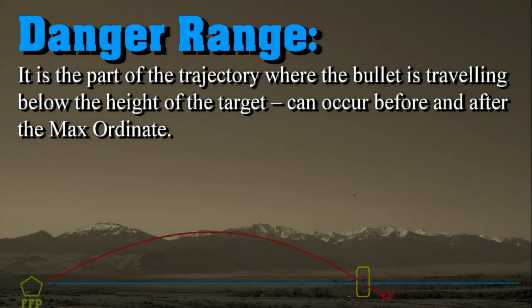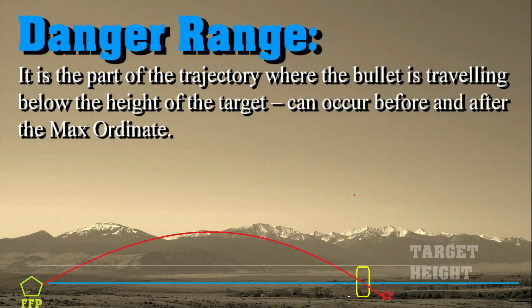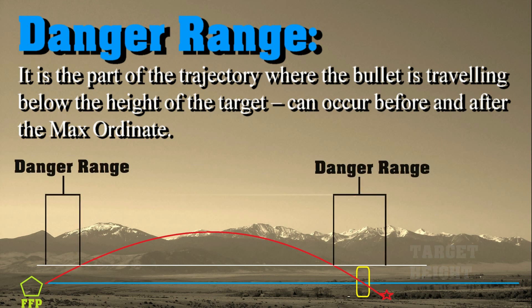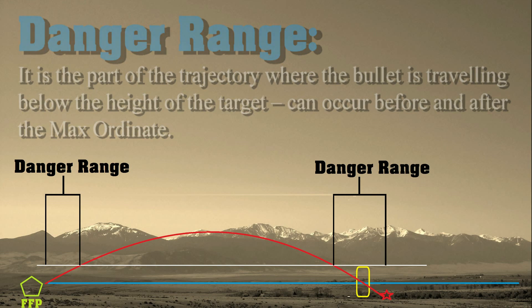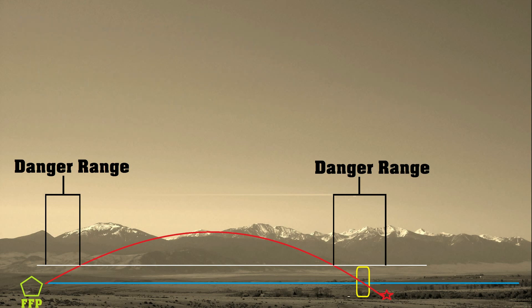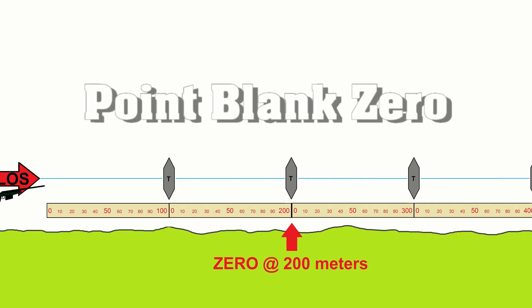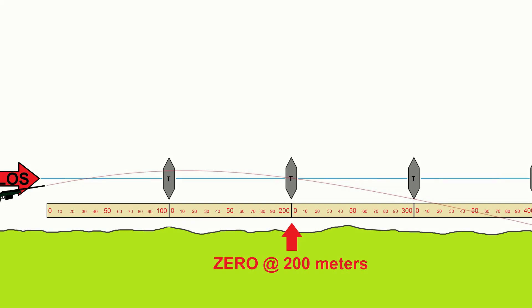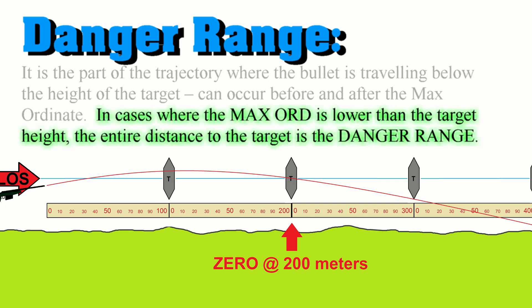Another term you might not want to get confused with danger space is danger range. Danger range is talking about the distance out to which you can hold at the target and still hit it. That's similar to what we discussed earlier with the point blank zero — if you're shooting from zero to 300 meters, like a lot of deer hunters who sight in their rifle maybe an inch and a half high at 100 yards, and figure they can still hit the deer out to 300 or 350 — that's essentially what danger range is talking about.